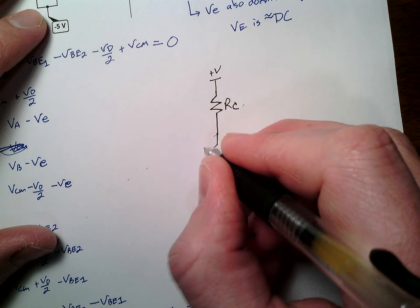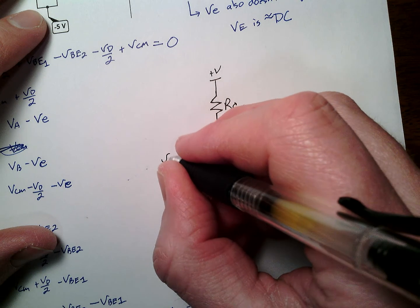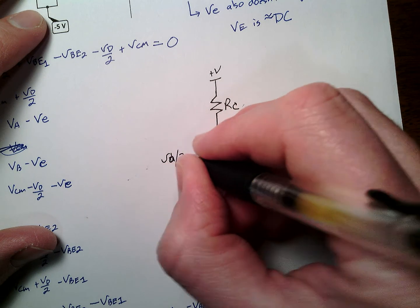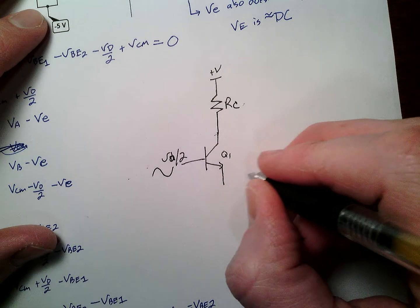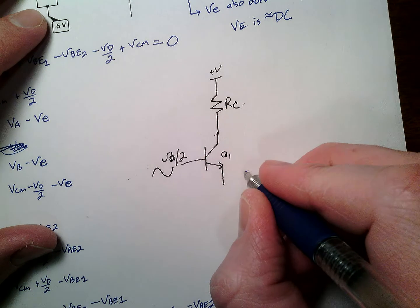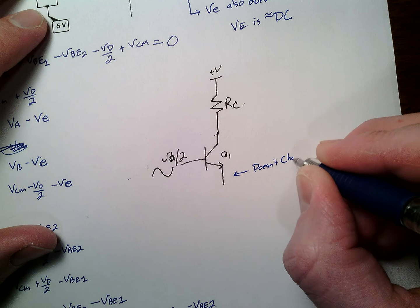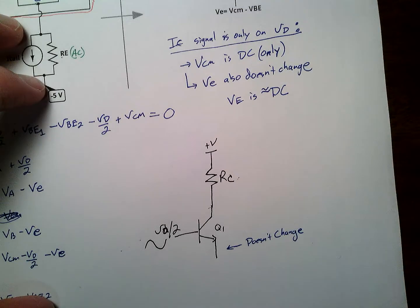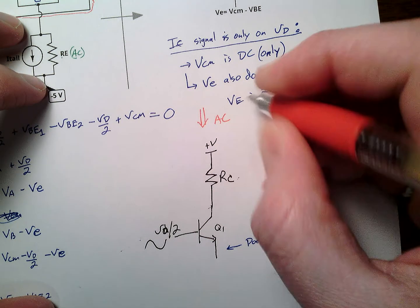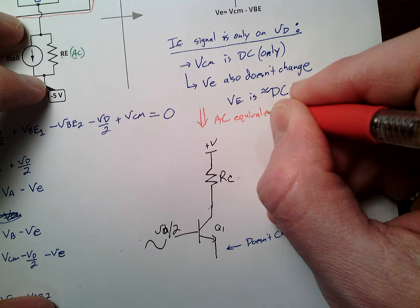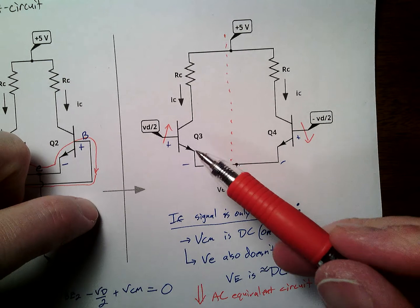I have this one. I have this one. This is Q1. And I have VD over 2. That's my signal going up and down. What do we do with here? This one, what should I do here? Doesn't change. And I'm, oh, what I really wanted was AC equivalent.